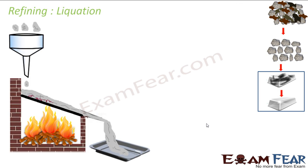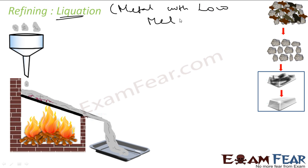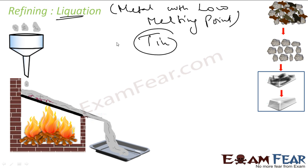The next method is liquation. Liquation is used for metals with a low melting point — we're not talking about boiling point here, but melting point. Metals that can easily melt, for example tin, which has a low melting point. We use this method to refine tin to get ultra-pure tin. We start with raw tin and end up with pure tin.